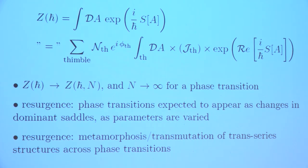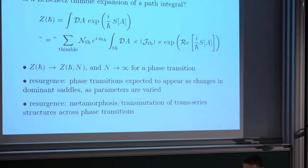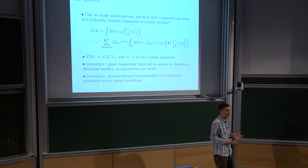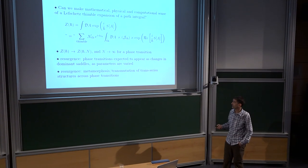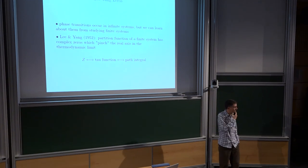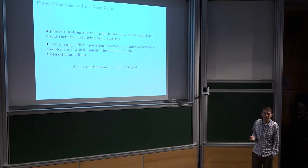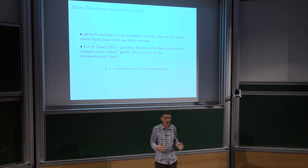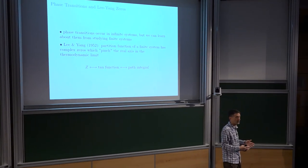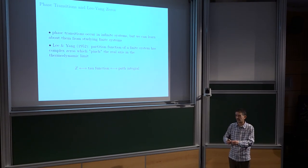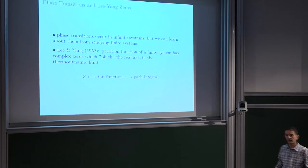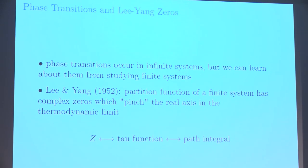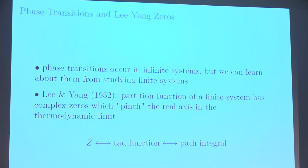An interesting thing about resurgence is that if we have a trans-series description in one phase, it will go through some metamorphosis and transmute into something very different-looking in another phase. There's something called Lee-Yang zeros — in a finite system there is no phase transition, but you can already see hints of one by looking for zeros of the partition function. In a finite system those zeros are off the real axis, but as you approach the thermodynamic limit, these complex zeros pinch the real axis at the location of the phase transitions. It's an extremely deep idea due to Lee and Yang.